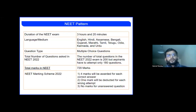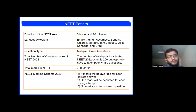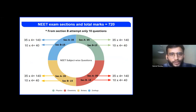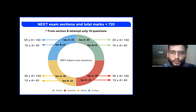Talking about the NEET exam, I have provided a brief introduction about how you can go through it. It's approximately a three-hour, 20-minute exam with multiple choice questions across different language mediums. The basic exam pattern is 720 marks. There are various sections — Section A and Section B — covering four subjects: physics, chemistry, botany, and zoology. Each section has equal marks, and each question carries four marks.